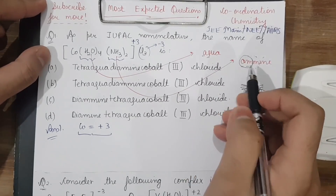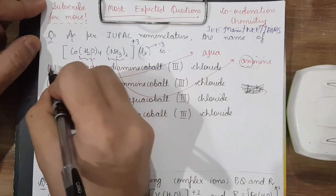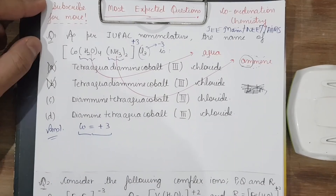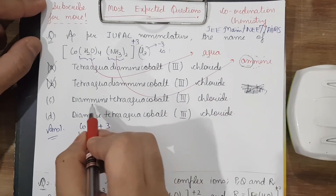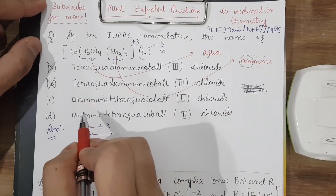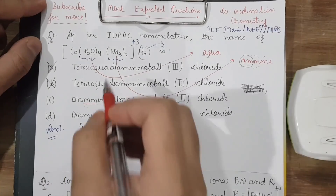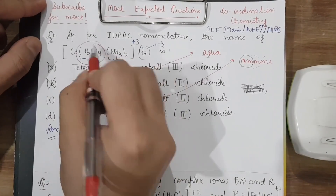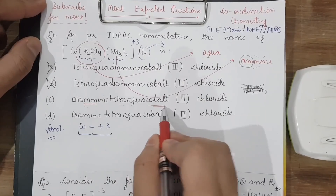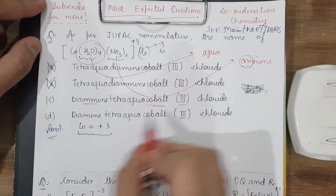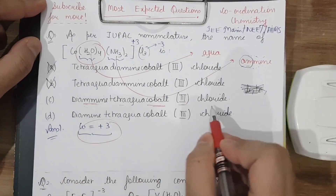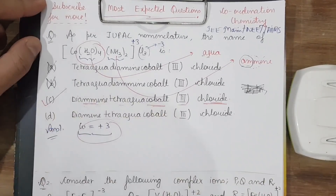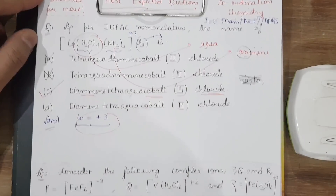Since 'amine' comes before 'aqua' alphabetically, options A and B go away. The correct spelling has double m, so the answer is 'diaminetetraaquacobalt(III) chloride' — that is option C.